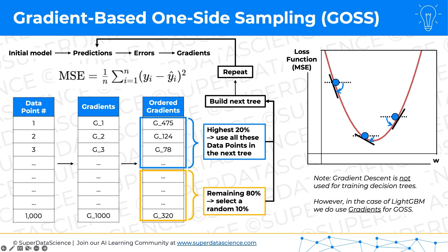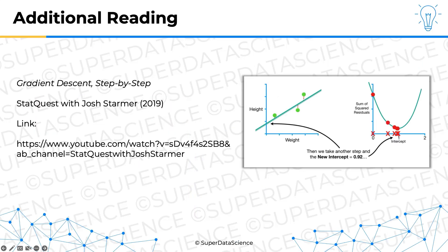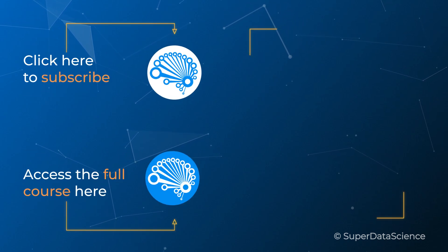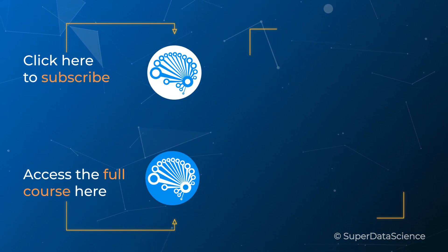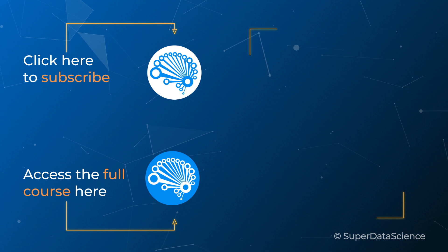So that's how it works. If you'd like a refresher or some additional information on how gradient is calculated, I recommend the tutorial by Josh Starmer called 'Gradient Descent Step-by-Step.' Just remember, gradient descent is not used for optimizing decision trees, but you can learn more about gradients from that tutorial. Make sure to check out these videos on the right or the full course in the description to continue your learning — I look forward to seeing you there.